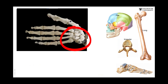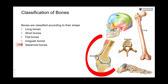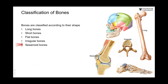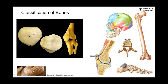Then we have what we call sesamoid bones. These bones are present in many places in the body, and by definition the origin of the word is that they look like sesame seeds. I'm showing you here an example of the largest of these sesamoid bones in the body. It is always present — other sesamoid bones are not always present, but this one is. It is called the patella, or the kneecap.